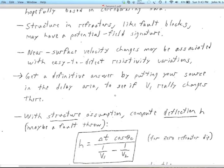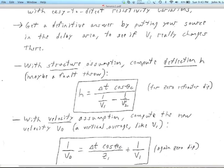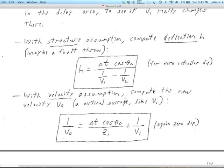So you can get a definitive answer by putting your source in the delay area to see if V1 really changes there, and measure a V1 right in the middle of the area. And if you don't, if V1 is the same in the area of the delay, then you know that it's got to be structure or deeper velocity, at least. And that's actually the secret behind Optum's SizeOpt 2D techniques that you'll have run on your own picks from our lab dataset for refraction. You get enough sources in enough of the area, and you can actually nail down the source of these variations.